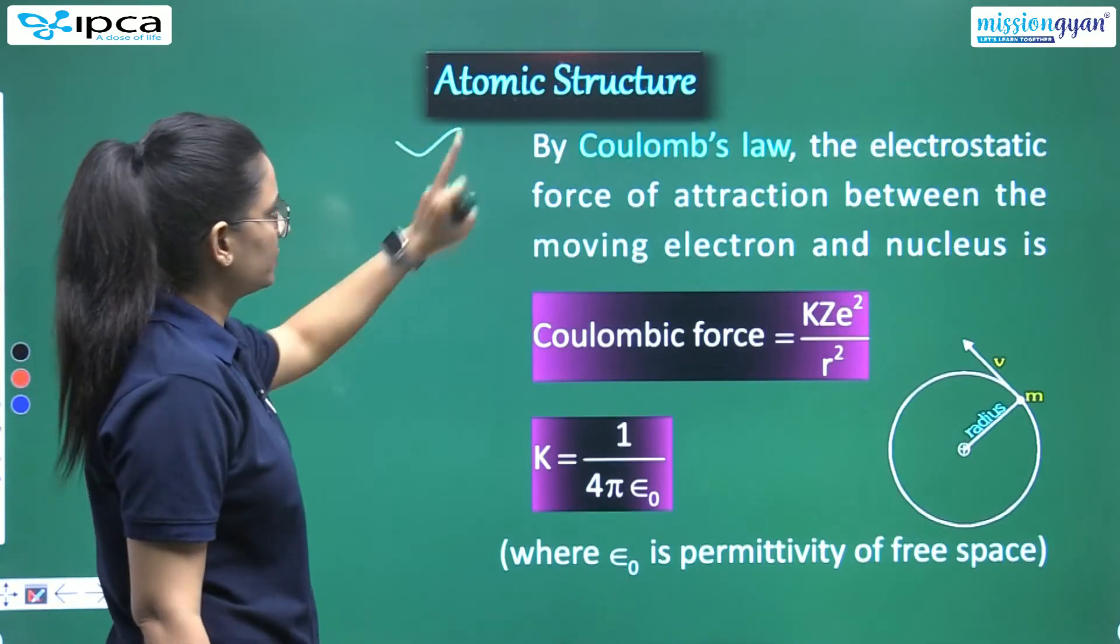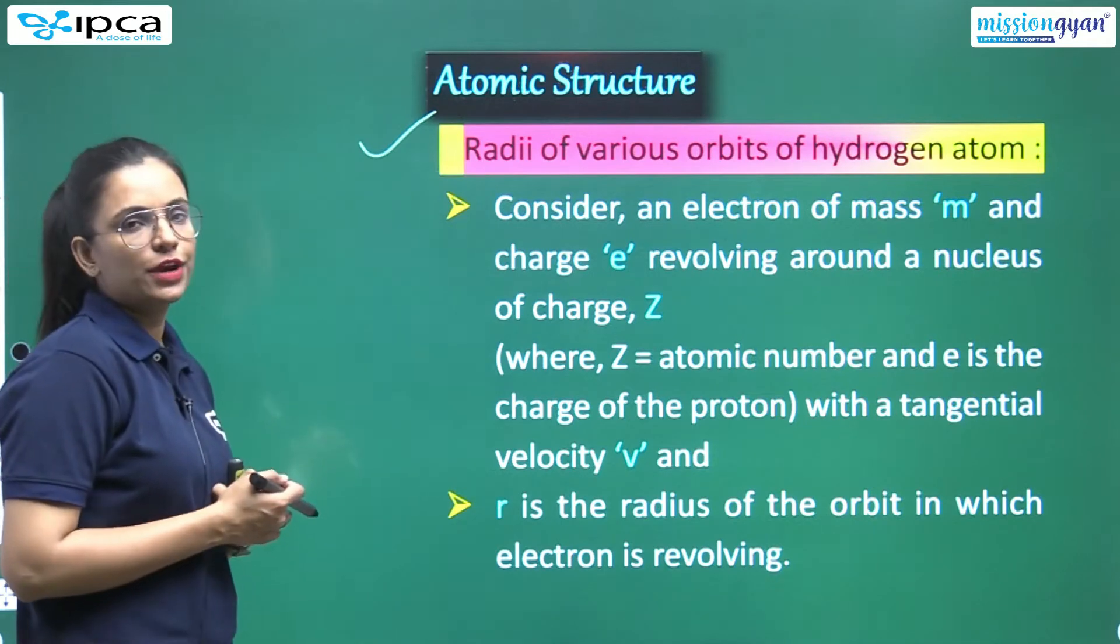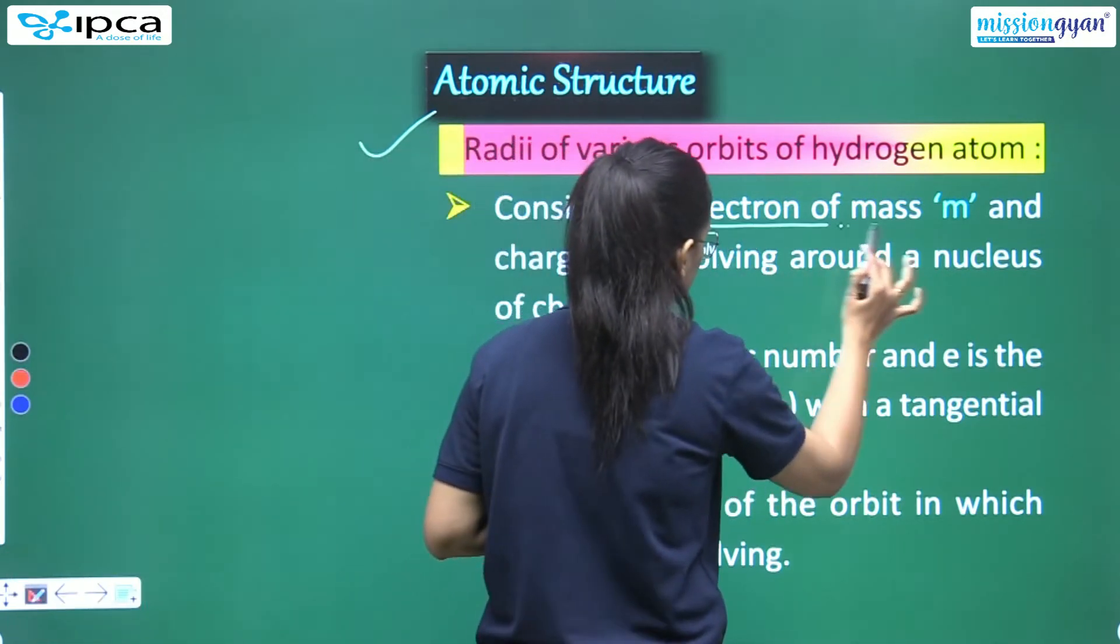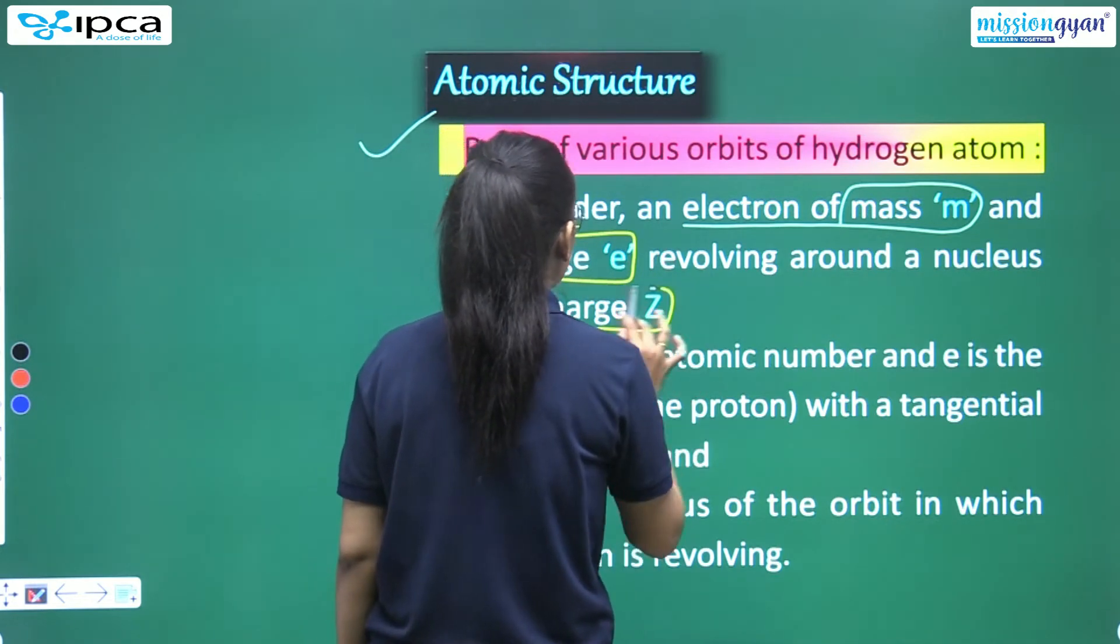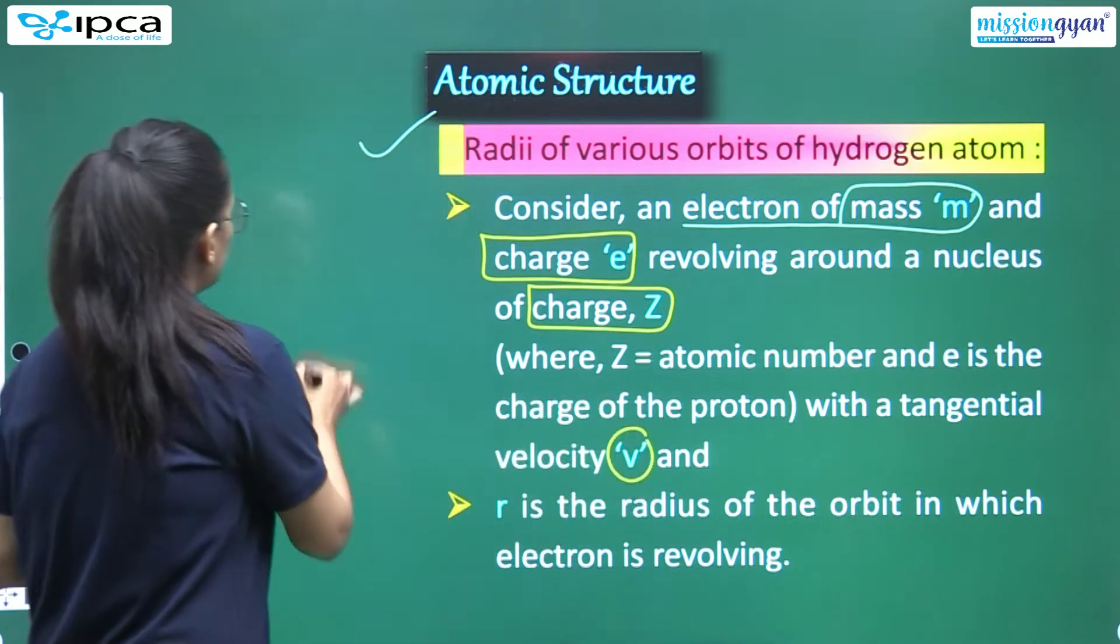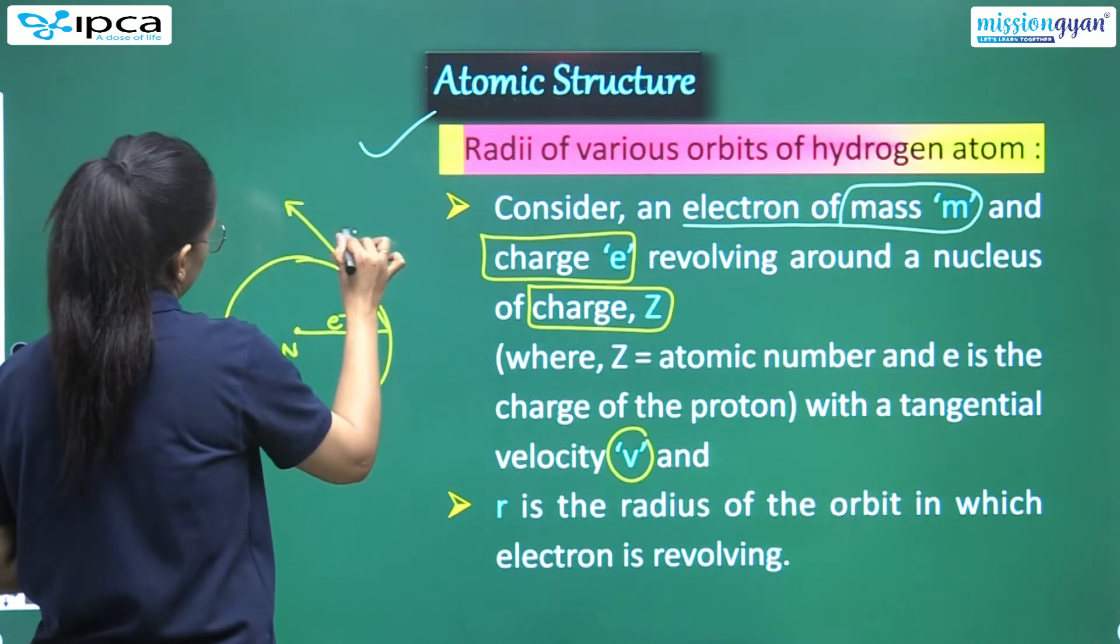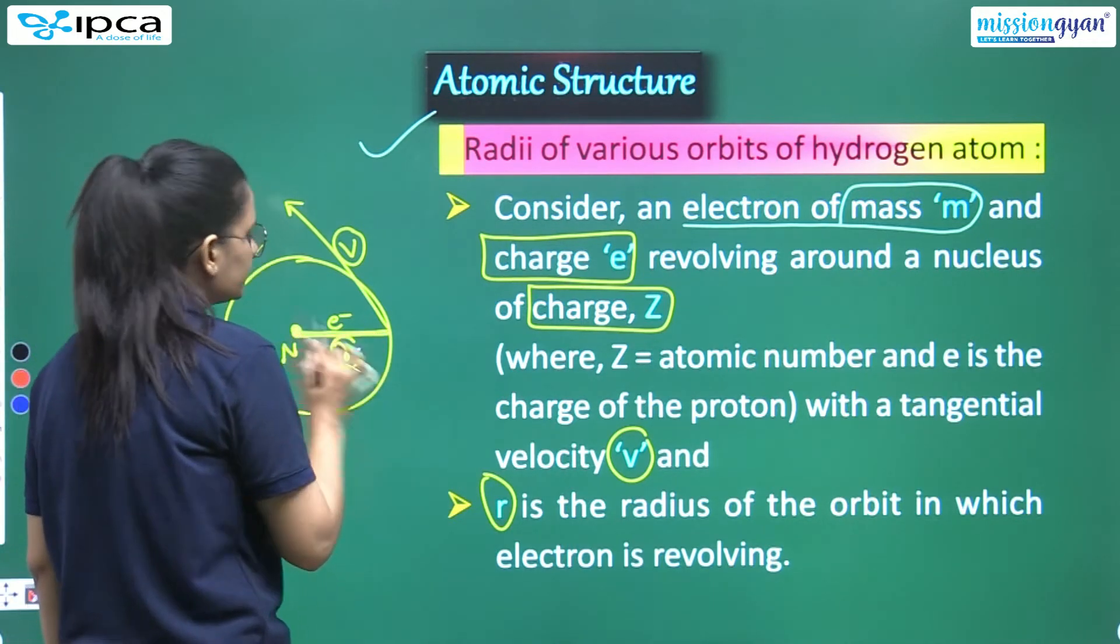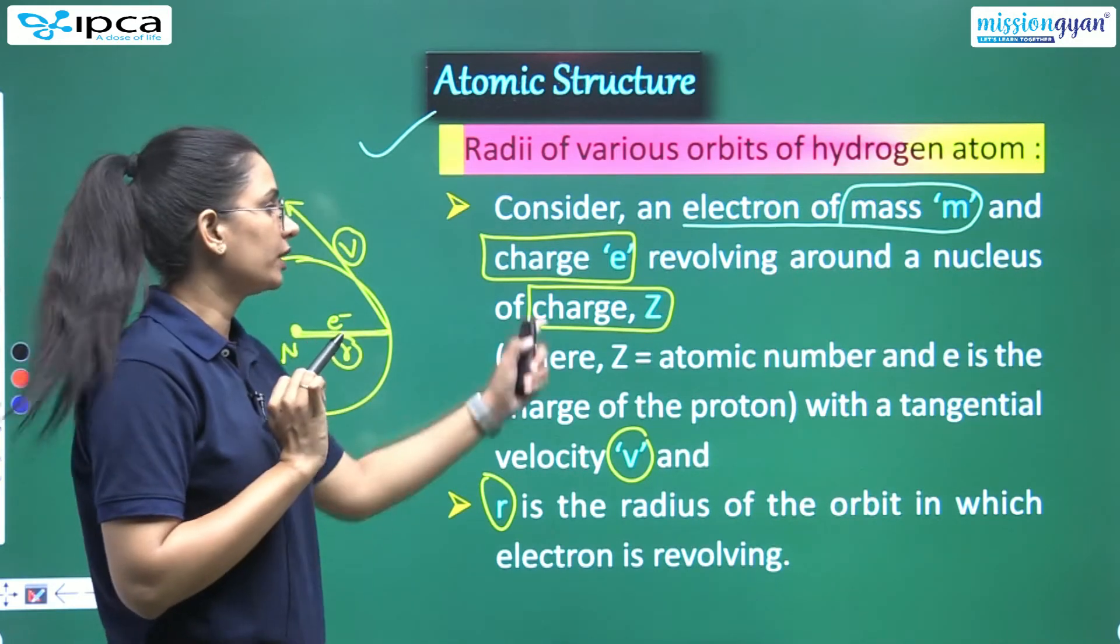So postulates are revised well. Now let's move ahead. We're talking about atomic structure. Now by Coulomb's law, first we were talking here - sorry for this. Now we have to read radius of various orbits of hydrogen atom. We talked about single electron, so now we're applying it in hydrogen atom's various orbits. So listen. Consider an electron whose mass is m, charge is e, revolving around nucleus whose charge is Z, where Z is atomic number, e is the charge of proton, and with a tangential velocity v. So this means - here is the electron, this is nucleus, this is our electron with tangential velocity, so this is your v. R is the radius of the orbit in which electron is revolving. This is what will be called radius.